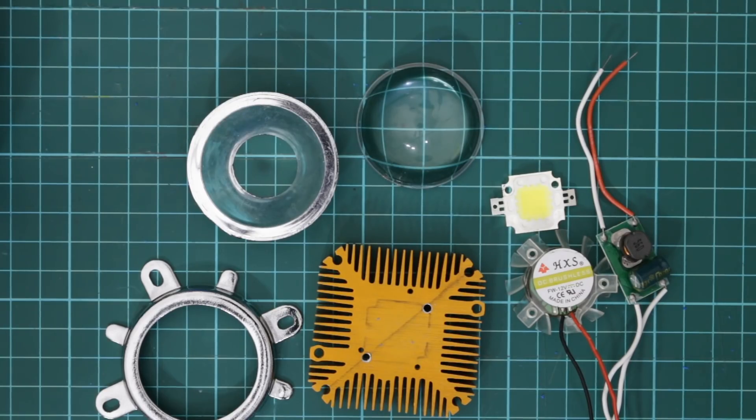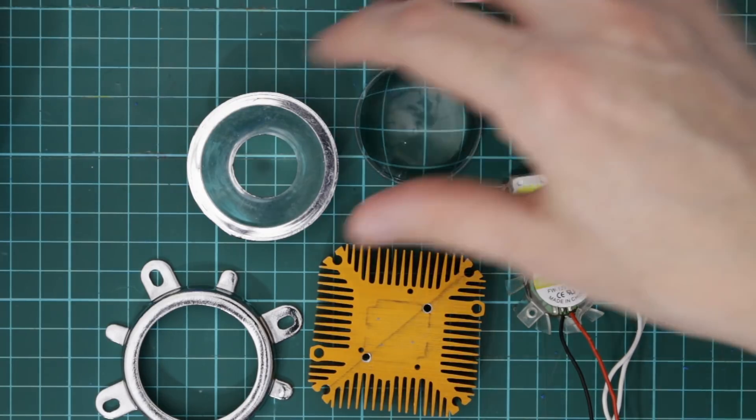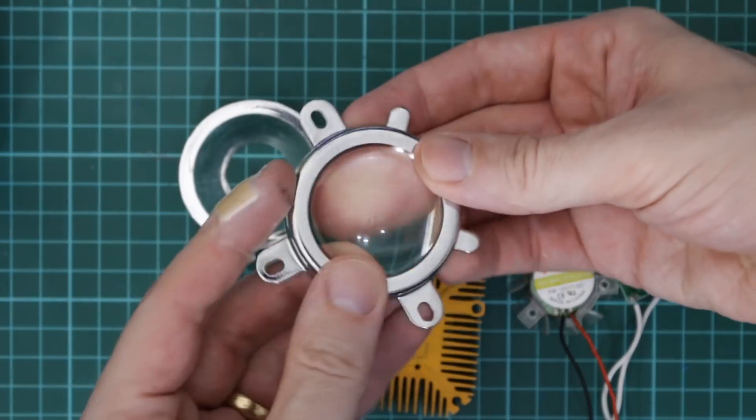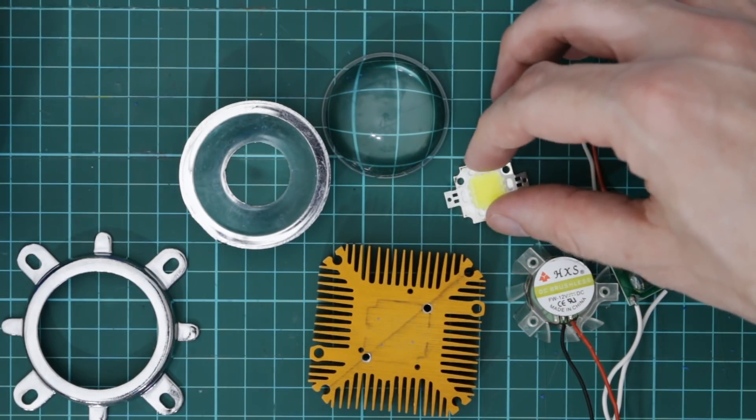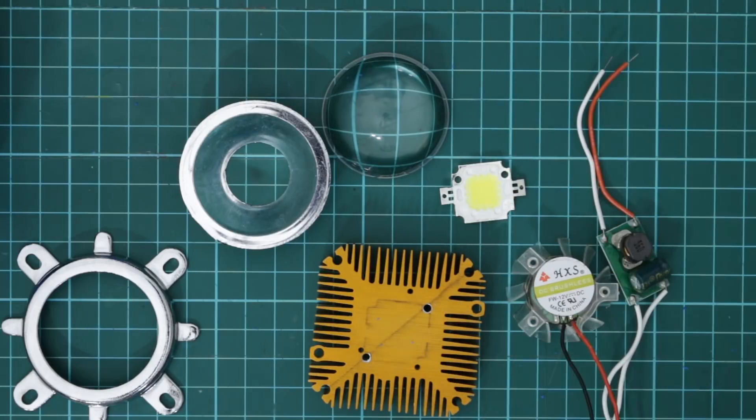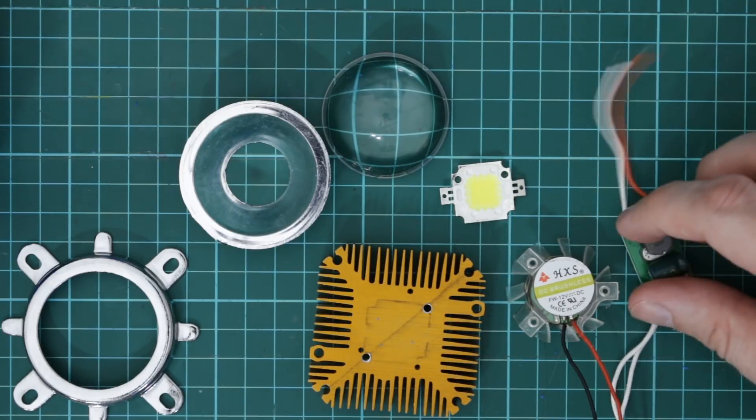So what are the main components of the torch? This is a set that I bought for maybe that's got the lens, the reflector and holder. The LED, that's a 10 watt COB with the heat sink and fan and a constant current source.